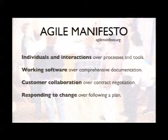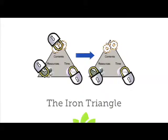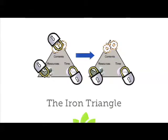Responding to change is more important than following a plan. We can't plan perfectly, but we still have to plan — we just don't need a perfect plan at the beginning. This is the traditional iron triangle of projects: we can fix contents, resources, and time, with quality in the middle. If we try to fix all three, quality is the one that ends up being flexible. Instead of sacrificing quality, make the contents flexible — it's much better to be flexible on scope than on resources or time.